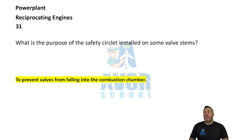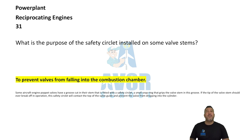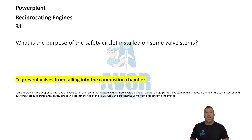Number 31. What is the purpose of the safety circlet installed on some valve stems? To prevent the valve from falling into the combustion chamber.